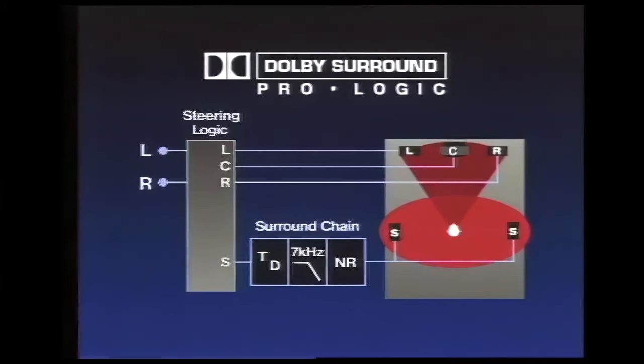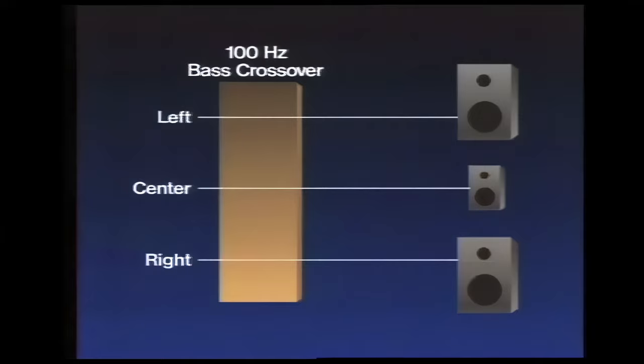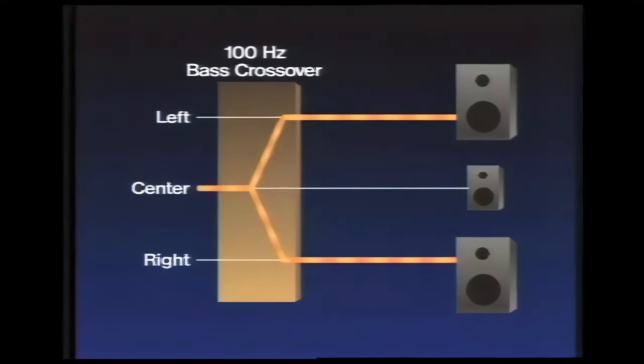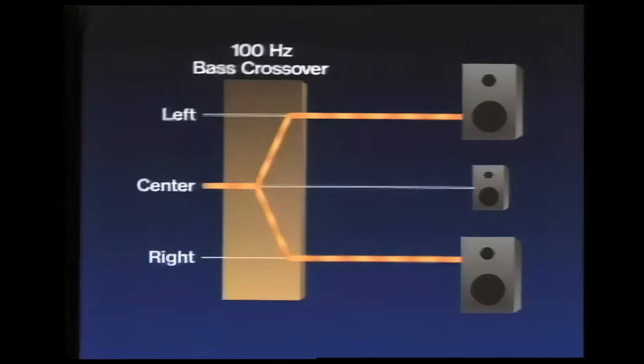One more thing about ProLogic's center channel. A 100 Hz crossover filter is provided to move the center channel's bass signals over to the left and right speakers. Since low frequencies do not affect our sense of sound localization, this technique allows use of a smaller center speaker and amplifier with no loss of important bass information.